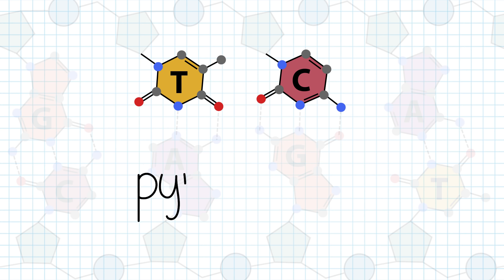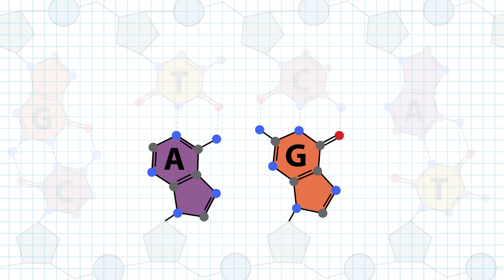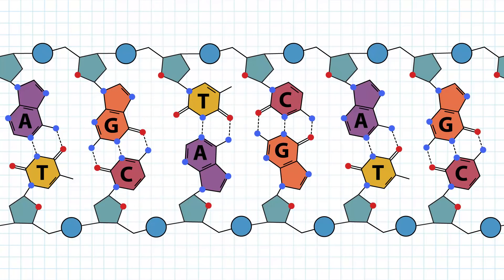Thymine and cytosine are called pyrimidines, characterized by their single ring structure. And adenine and guanine are called purines, which have double rings. The geometry of the AT or TA and GC or CG base pairs is the same, allowing for symmetry and base stacking in the helix.